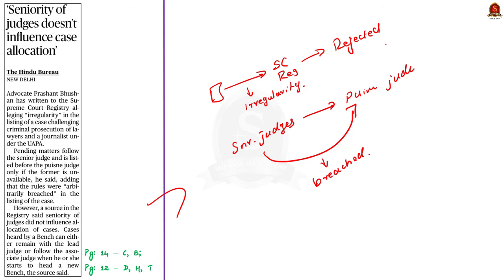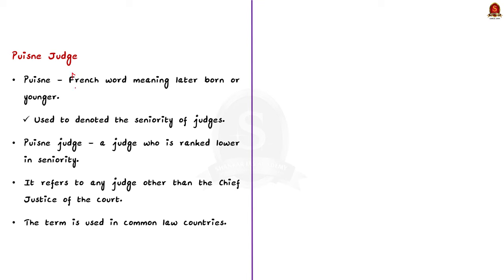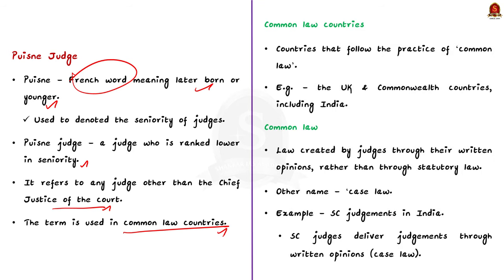In this discussion, let us understand about the term puisne judge in detail. The word puisne is a French word and it means 'later born' or 'younger.' So, the term puisne judge refers to a judge who is ranked lower in seniority. It is used to refer to any judge other than the Chief Justice of the court. Note that the term puisne judge is used in common law countries.